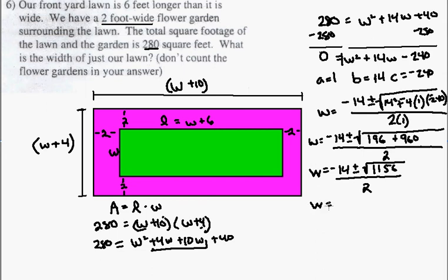Next, taking the square root of 1,156, I get 34. So now I have negative 14, plus or minus 34, all over 2.